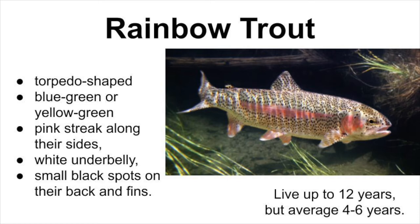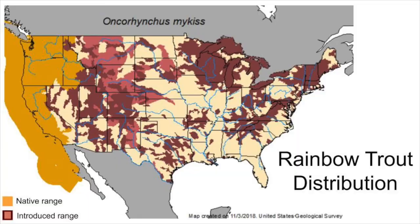Rainbow trout can live up to 12 years, but on average they live about 4 to 6 years. The rainbow trout is native to the rivers and lakes of North America, west of the Rocky Mountains specifically.